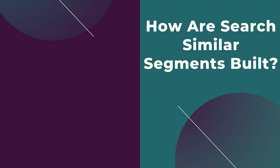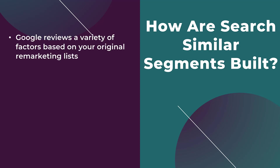Google Ads is going to look at fairly recent search activity for any of the users that were part of your original remarketing lists — in some way it's a higher level of search history targeting. Once the search history information is collected, Google is going to try to find new people with similar behaviors. To do this, Google looks at the number of people on your original list. Larger lists give Google more signals; more people means more searches collected to build a better similar segment.